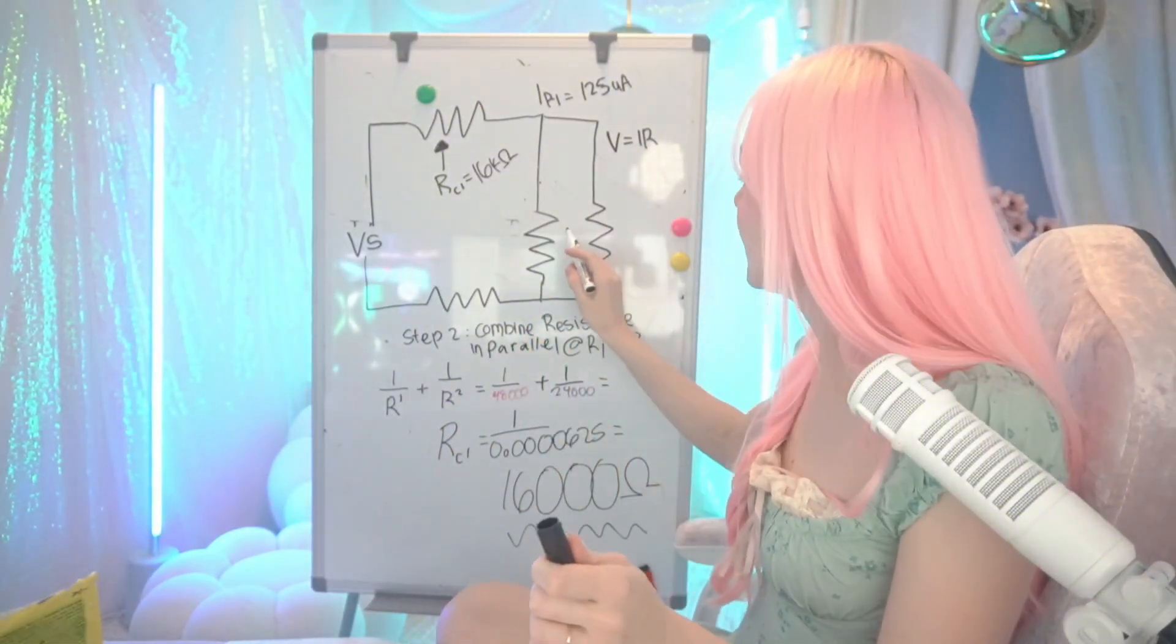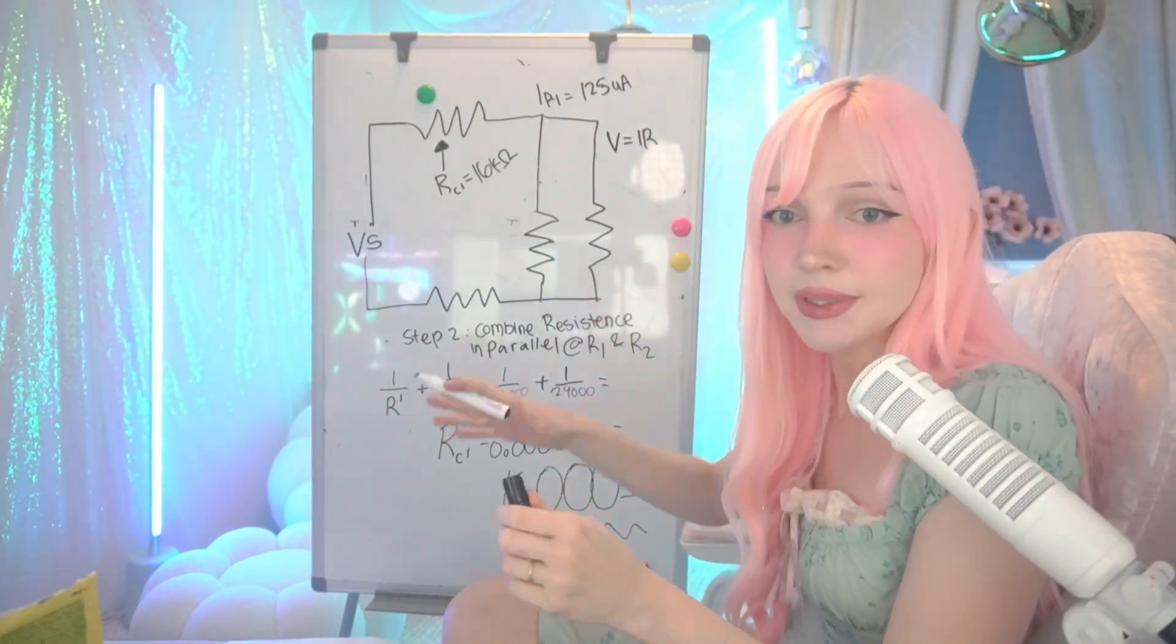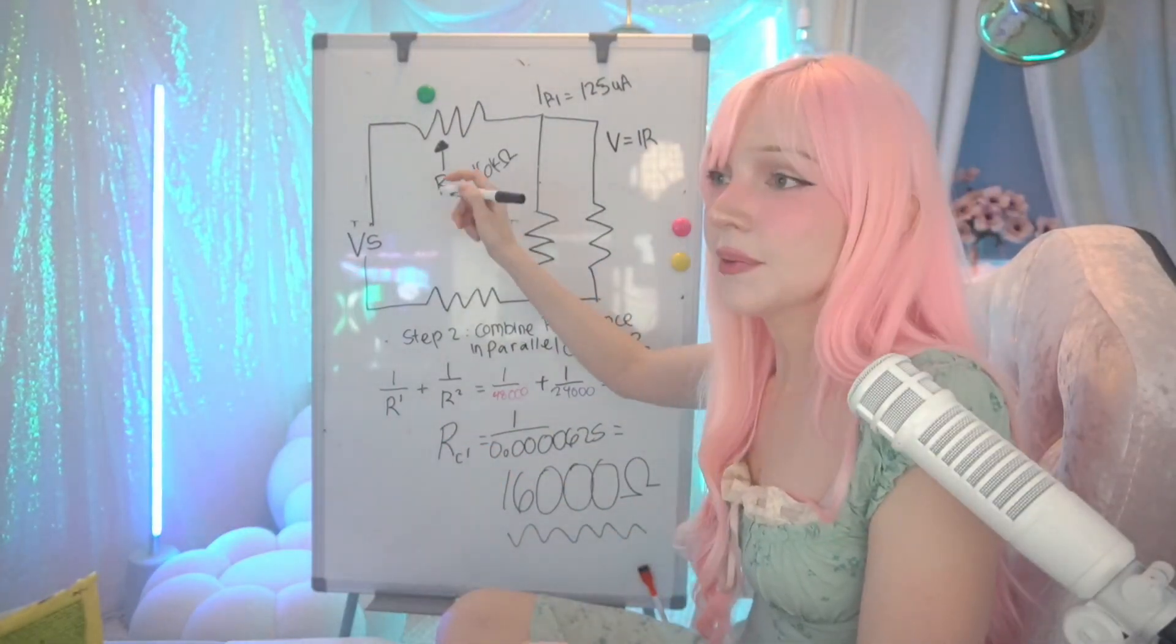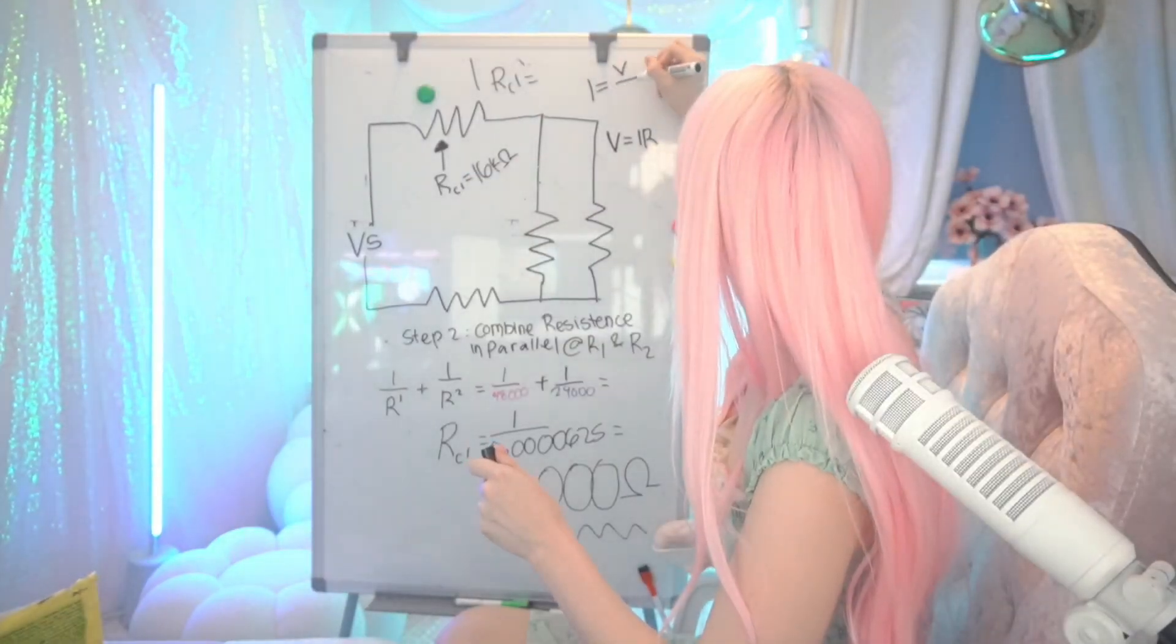So now we have to combine these two parallels, which is the same equation as down here. We just got to plug in these numbers now. And we can find the current right here, by the way. To find our new current, I equals V over R.